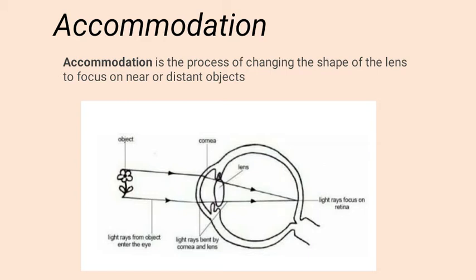As you can see, this is the structure of the eye. Light rays from an object enter into the eye, where they are refracted by means of the cornea, and then when these light rays enter the lens, refraction occurs again, so basically double refraction occurs.